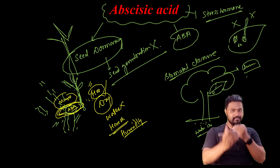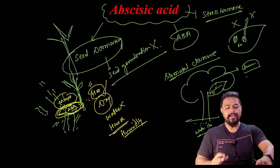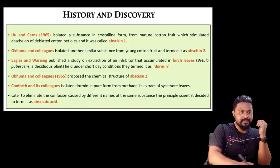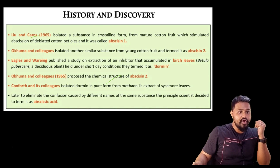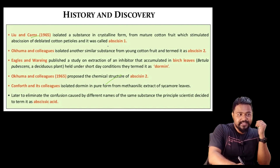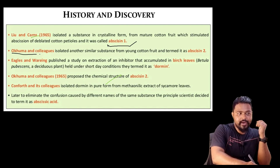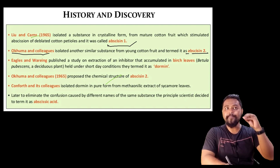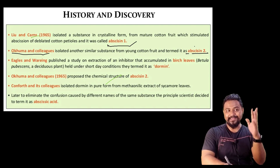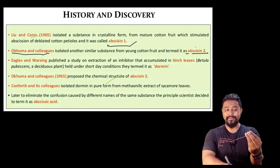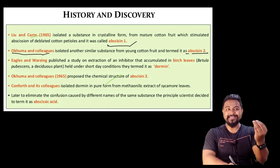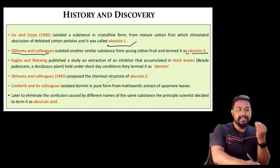Regarding discovery: Ohkuma and colleagues isolated a substance in crystalline form from mature plants and called it Abscissin 1. Later, Addicott and colleagues isolated Abscissin 2. Scientists studying stress responses in plants isolated these chemicals and named them separately.